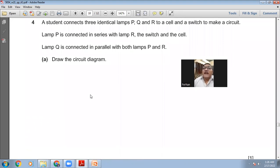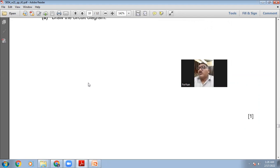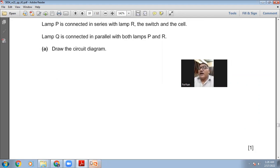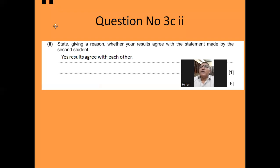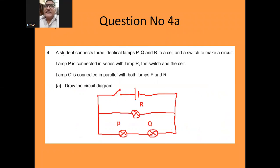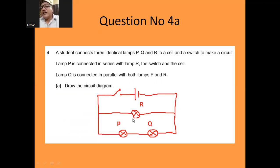Question four. A student connects three identical lamps P, Q, and R to a cell and a switch to make a circuit. Lamp P is connected in series with lamp R, the switch, and the cell. Lamp Q is connected in parallel with both lamps P and R. Draw the circuit diagram — it's a one-mark question. You can see I have drawn the circuit: here is the battery, the switch, P and R connected in series, and Q connected in parallel with both P and R.